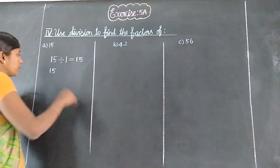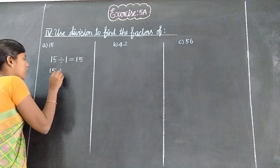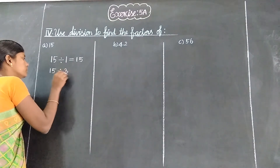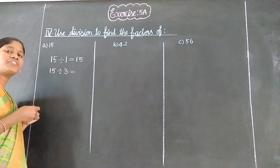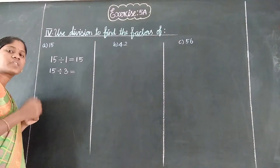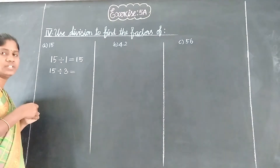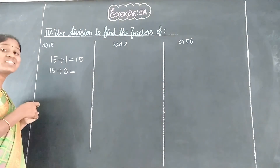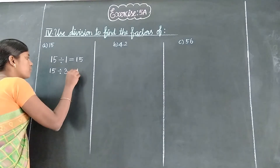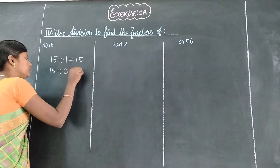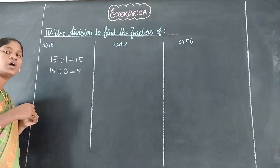2 tables: 15 is not equal. So next, 2 tables — we skip it. 3 tables — we check it. How many 3's are in 15? 5 threes are 15. So 5 is in the group. Next, 4 table — we check it.